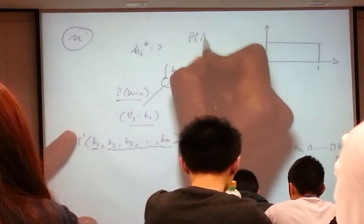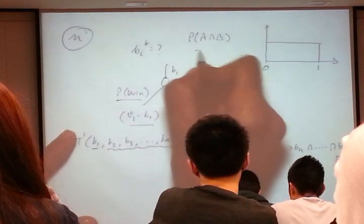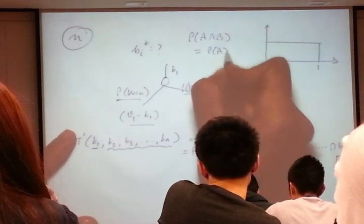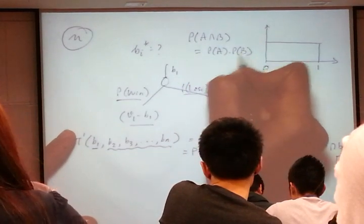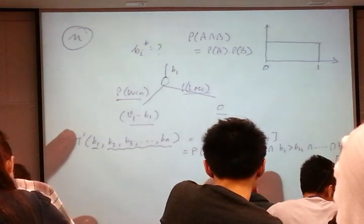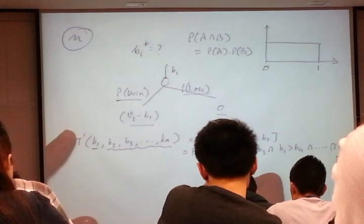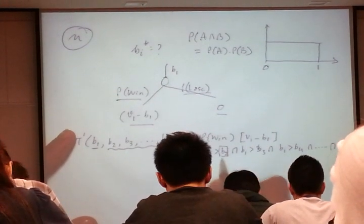The probability of A and B, if A and B are independent events, it's just a multiplication of the probabilities. So, if bidders' valuations are independent, bidders' bids will also be independent.